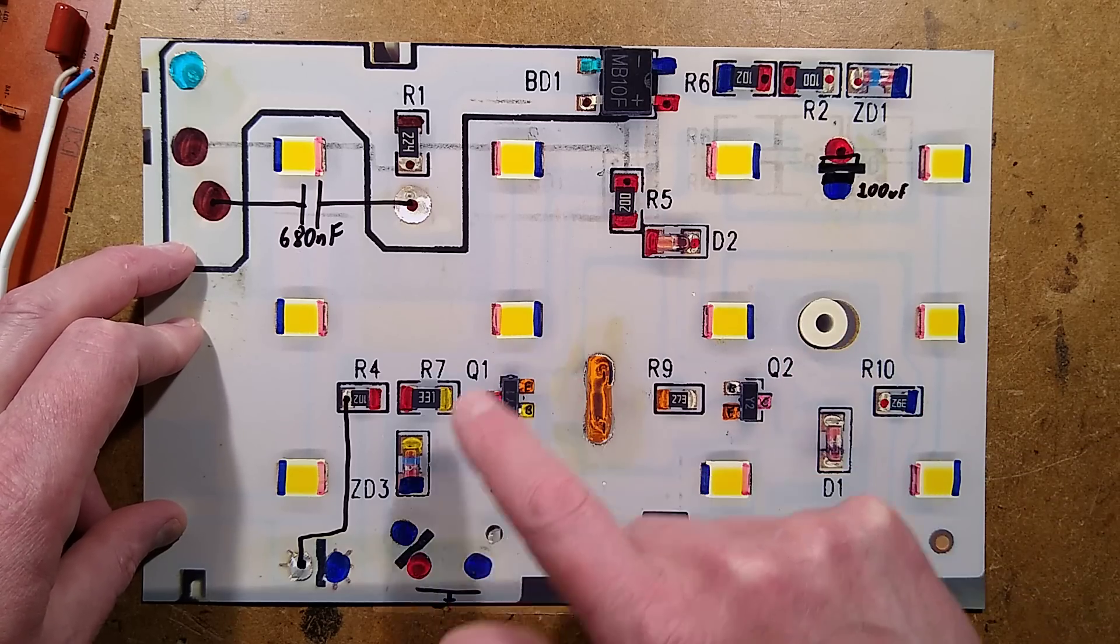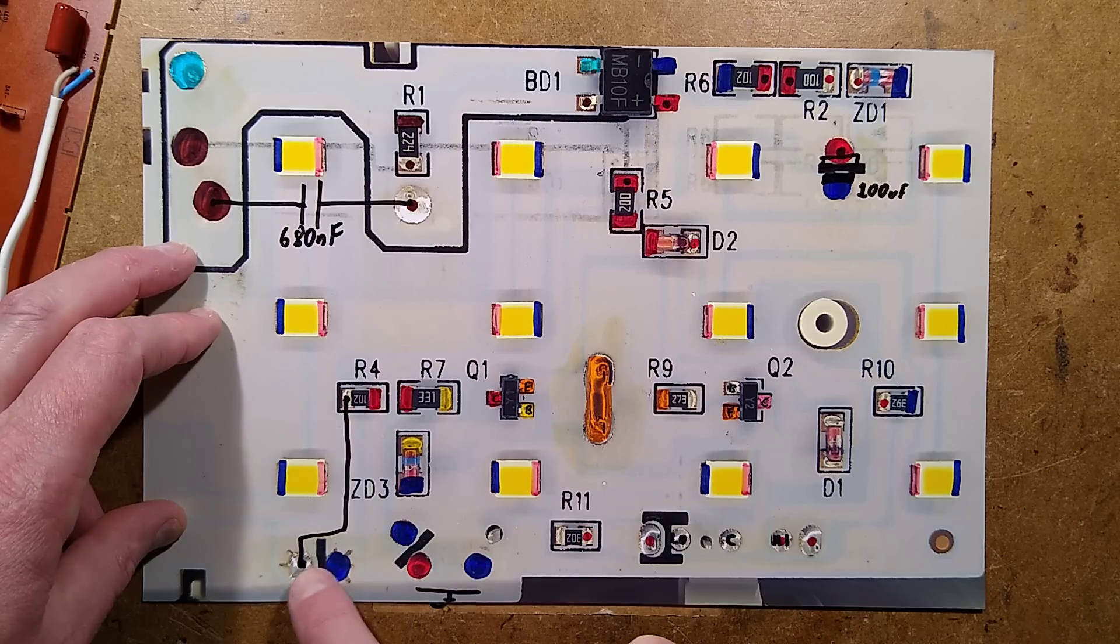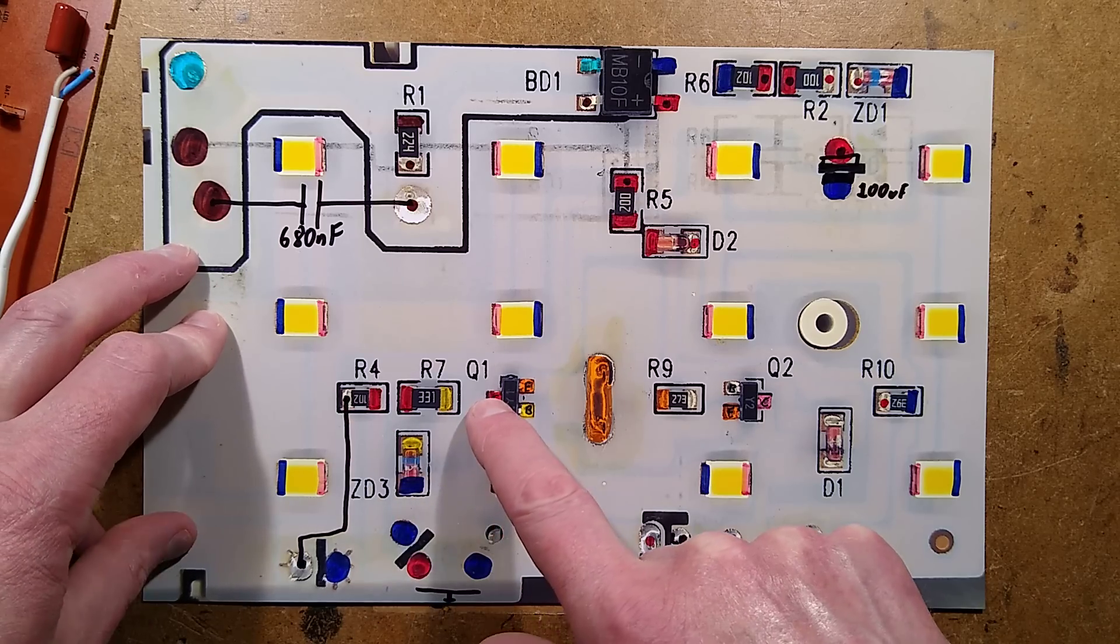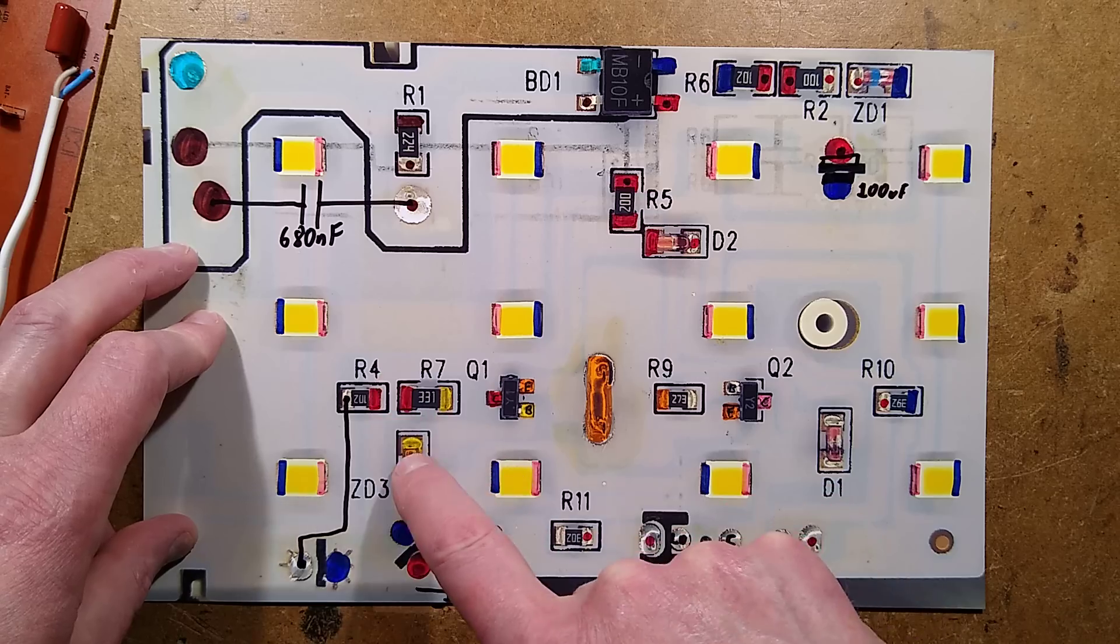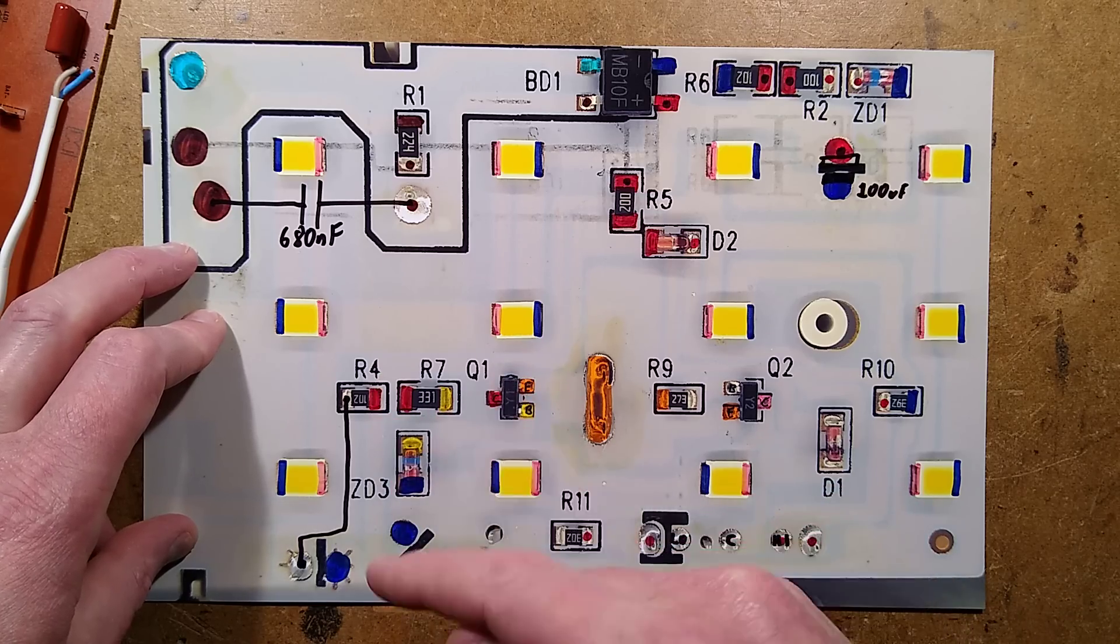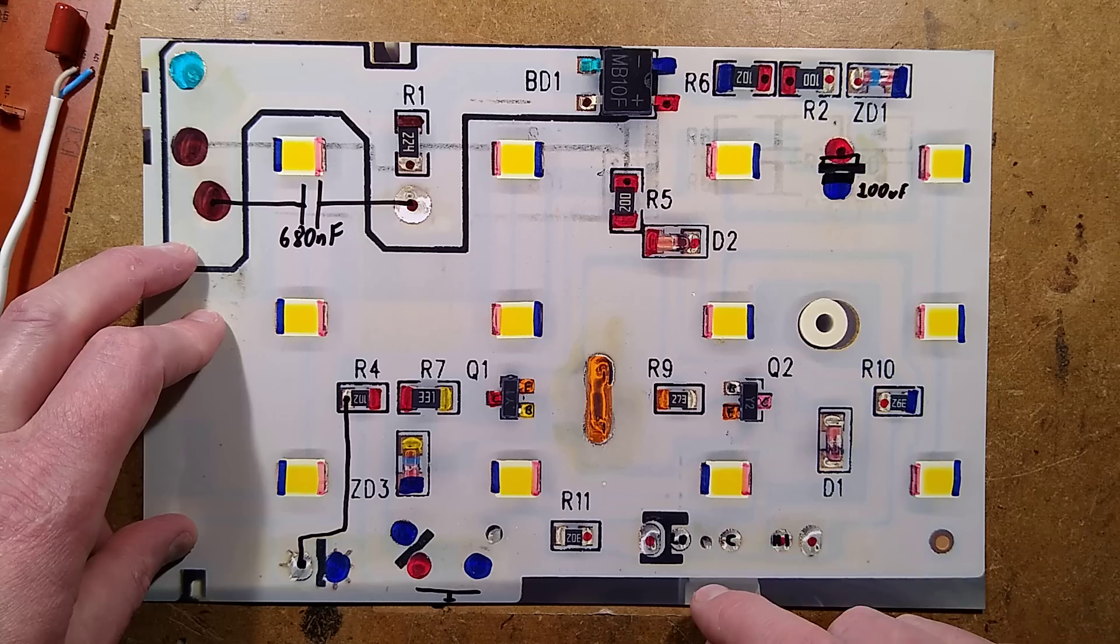Here is the charge circuit. Now this 1k resistor here is lighting the LED. The charge circuit is basically a resistor, a zener diode and a transistor and it's a very simple voltage regulator. Very weird.